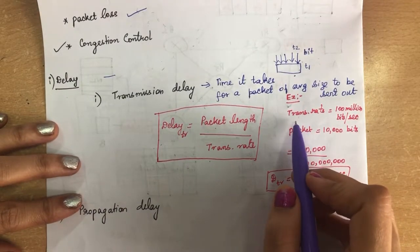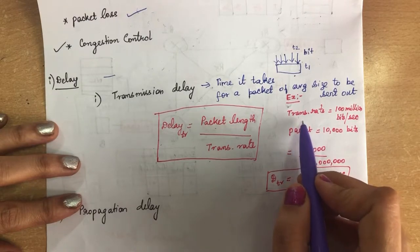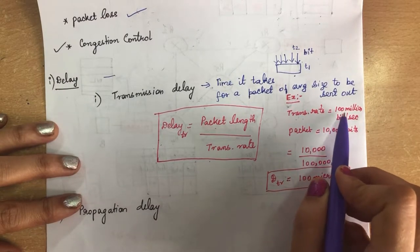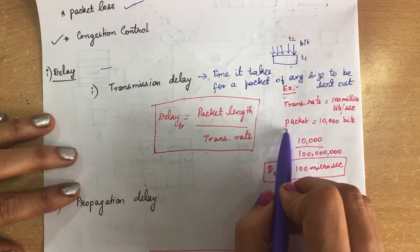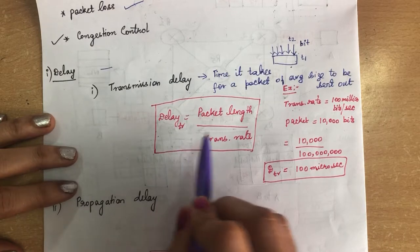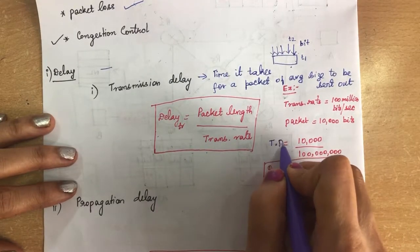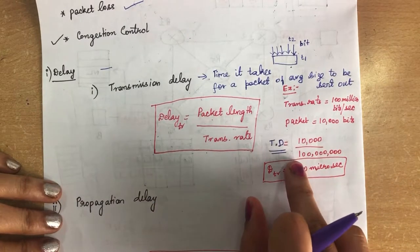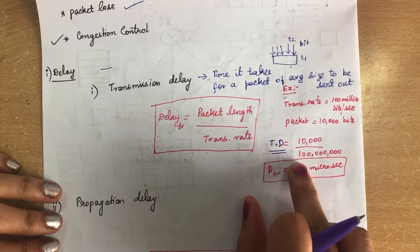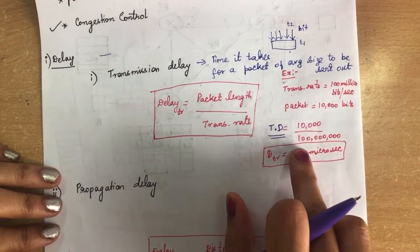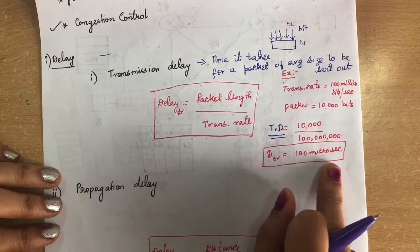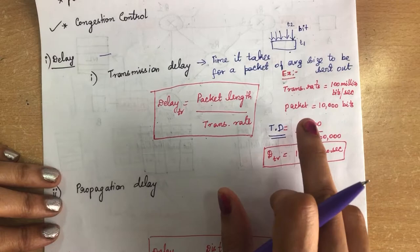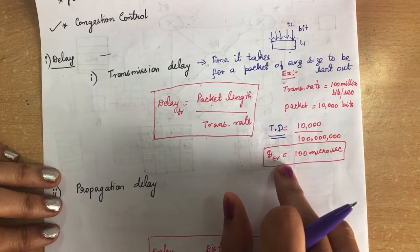For example, in a fast Ethernet LAN, a packet has been sent with a transmission rate of 100 million bits per second and the packet length is 10,000 bits. Transmission delay equals packet length divided by transmission rate: 10,000 divided by 100 million per second, which gives us 100 microseconds. This is how you calculate transmission delay.